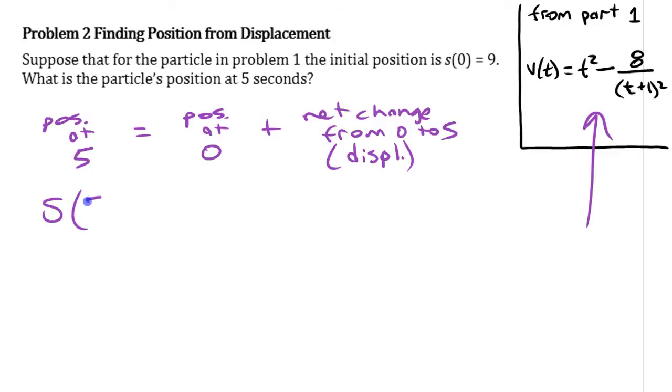So using the symbol s(5), this is s(0) plus the integral from zero to five of that velocity. You can use that definite integral there. This was 9, we're given that it's 9, and this from before was 35, so that gives us 44 centimeters.